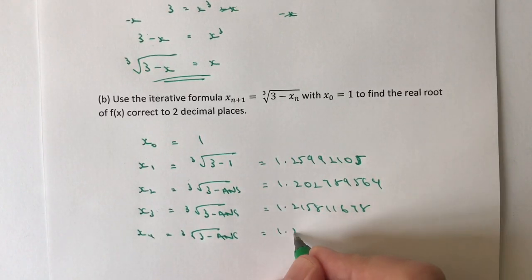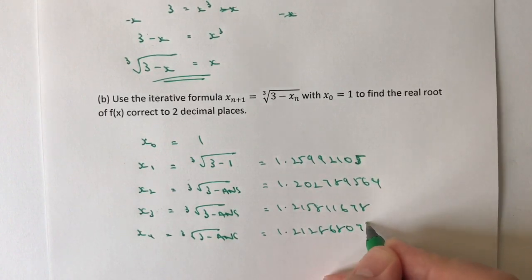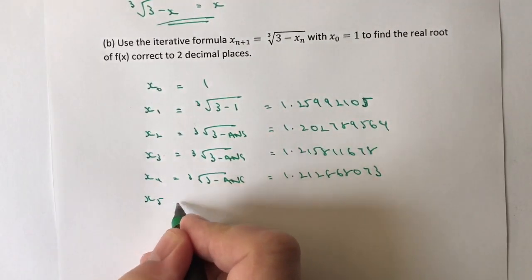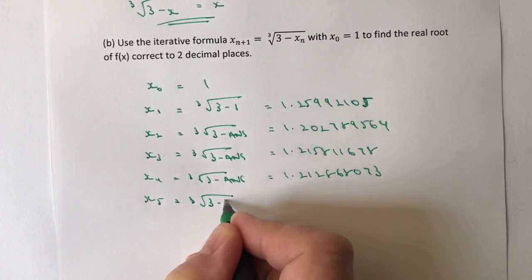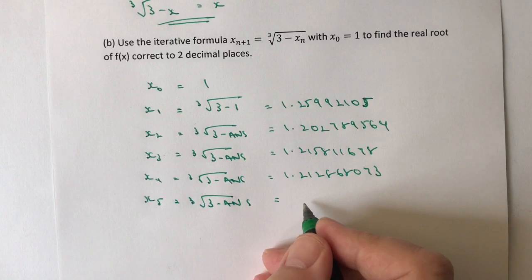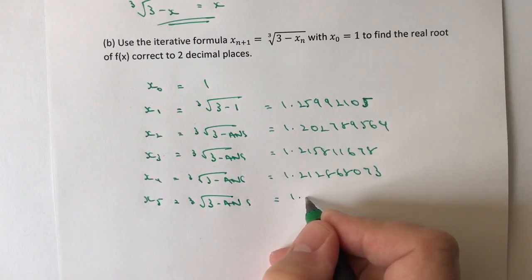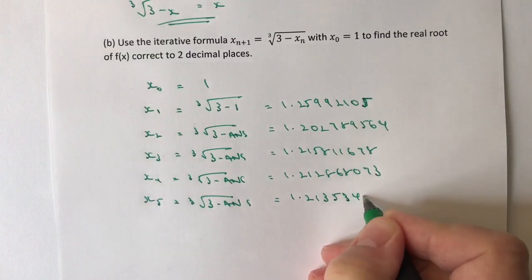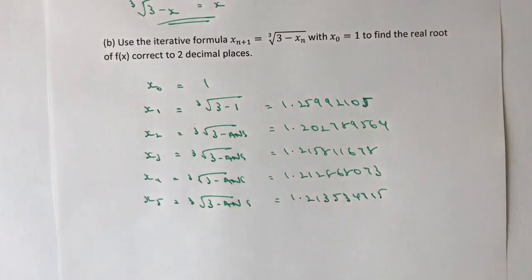What we're going to get now is 1.212868073 for x₄. And for x₅, cube root again, three minus the answer, plug that in, and that's going to give us 1.213534715.